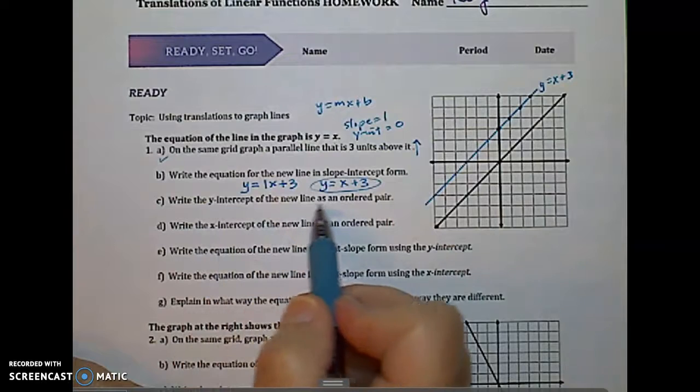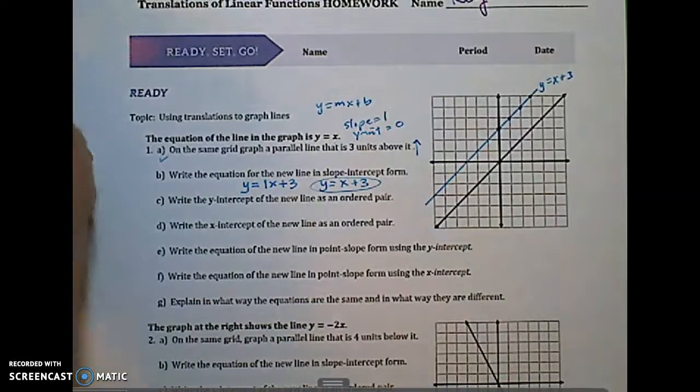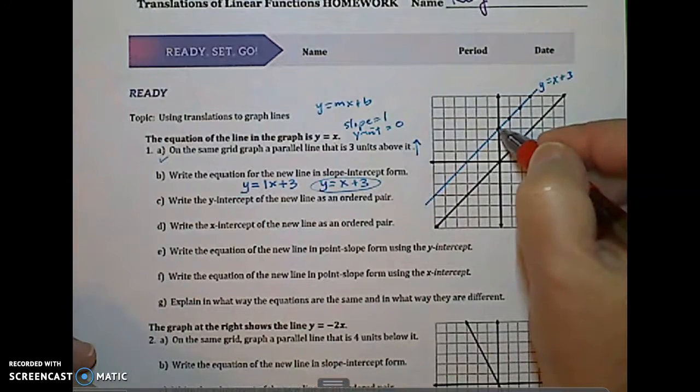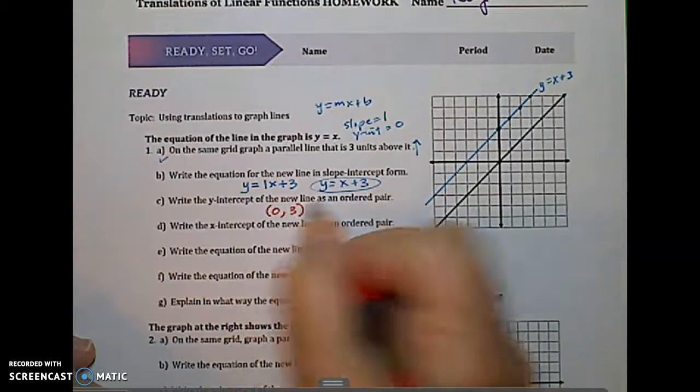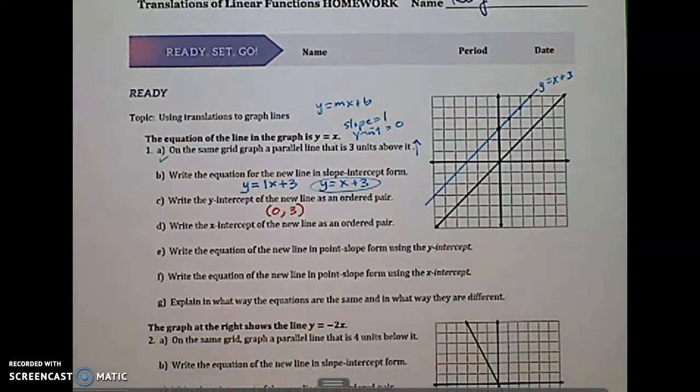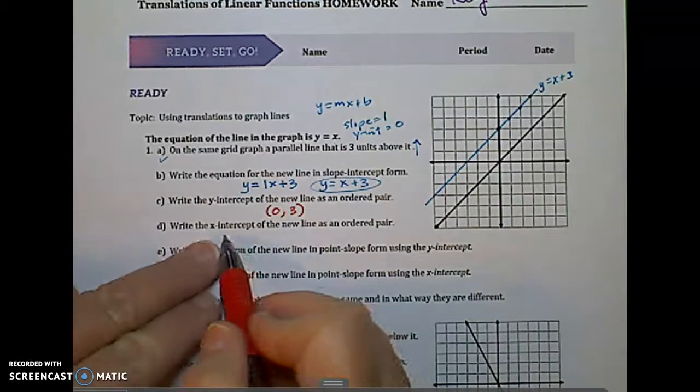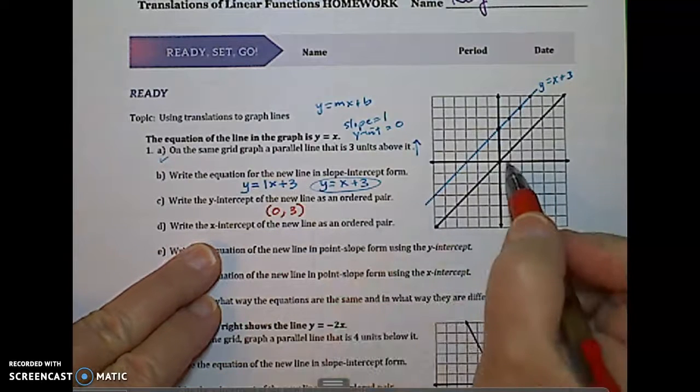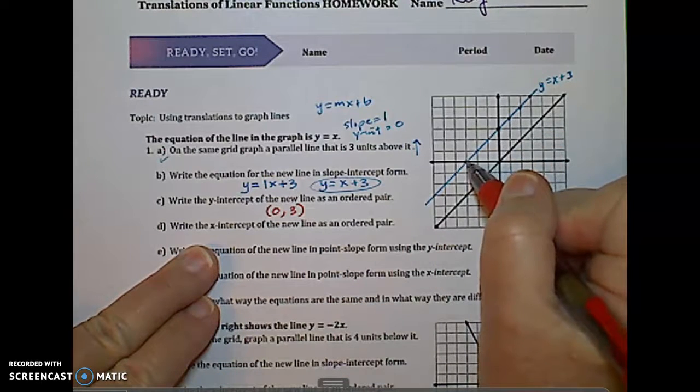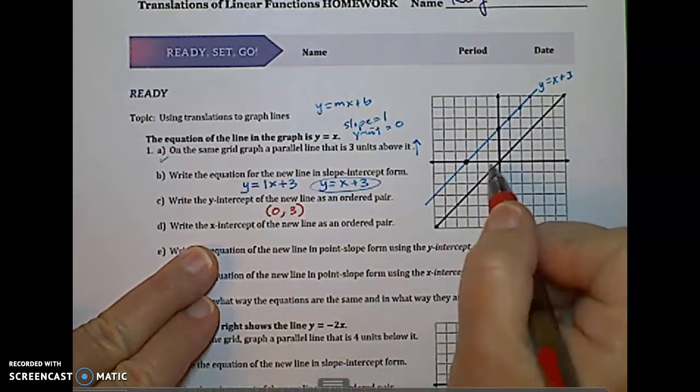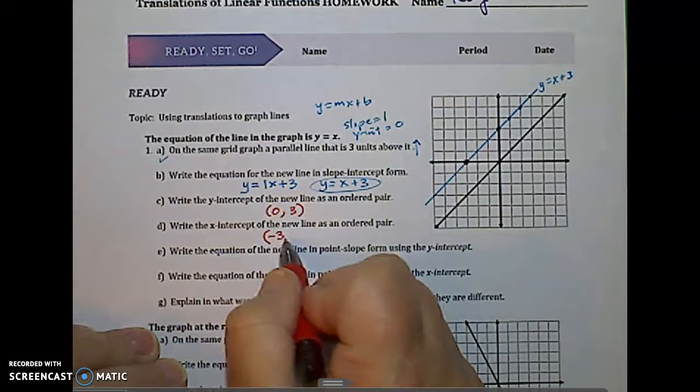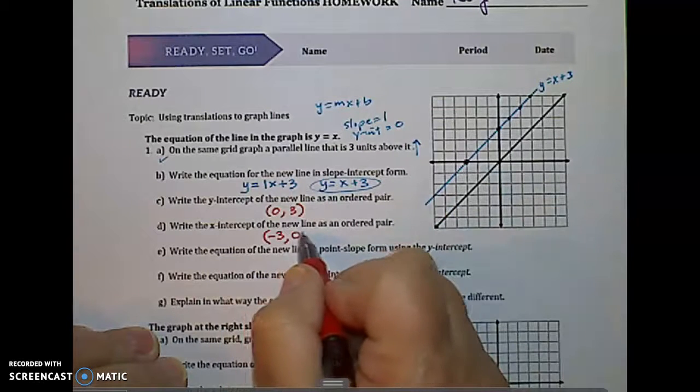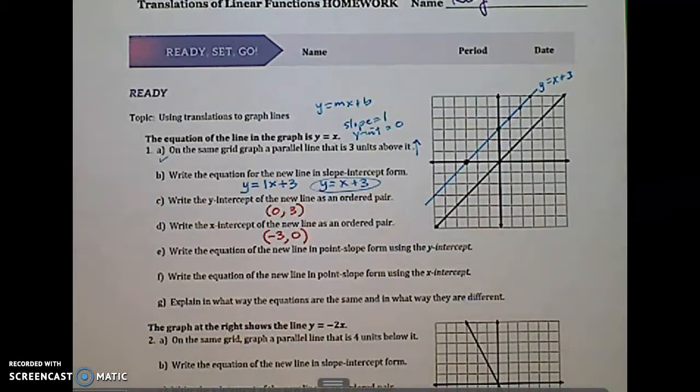Write the y-intercept of the new line as an ordered pair. So remember the y-intercept as an ordered pair. The x-value comes first, which is zero. And the y-value is three. So the ordered pair for the y-intercept is zero, three. The x-intercept of the new line is where the line crosses the x-axis, which is right here. One, two, three. So that is negative three in the x-direction and it's at y equals zero in the y-direction.